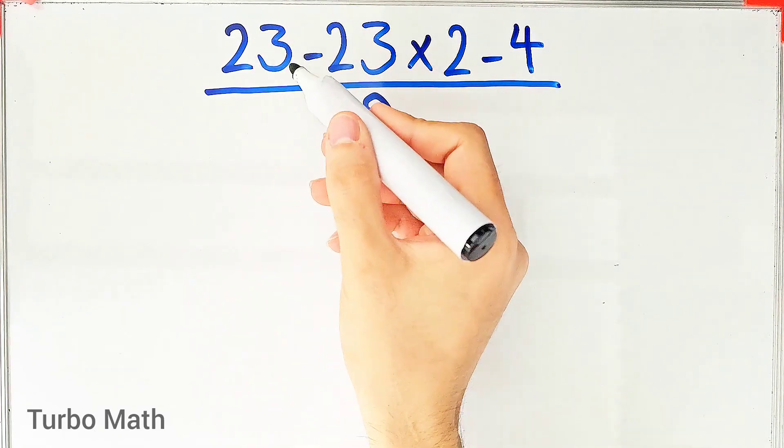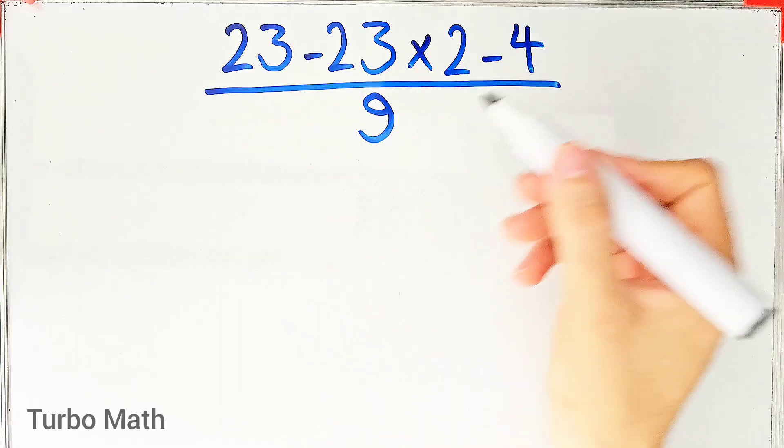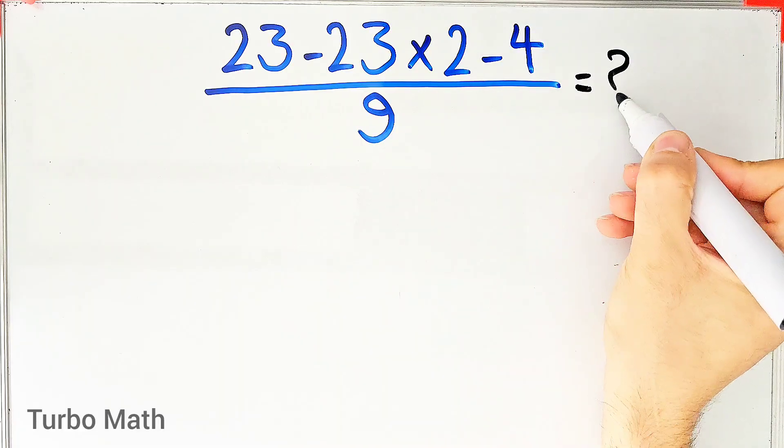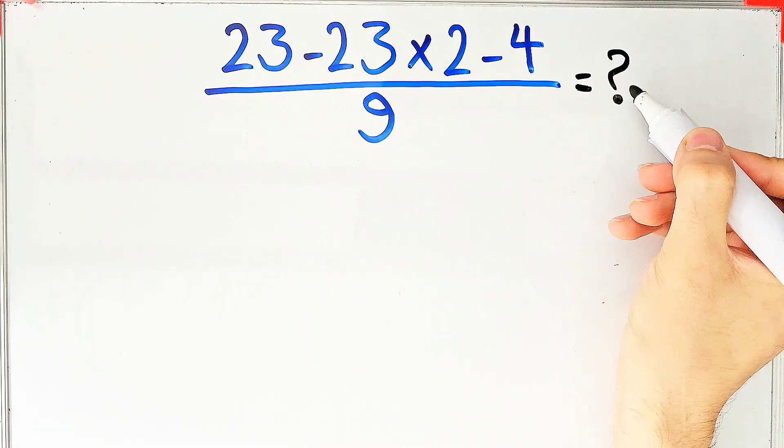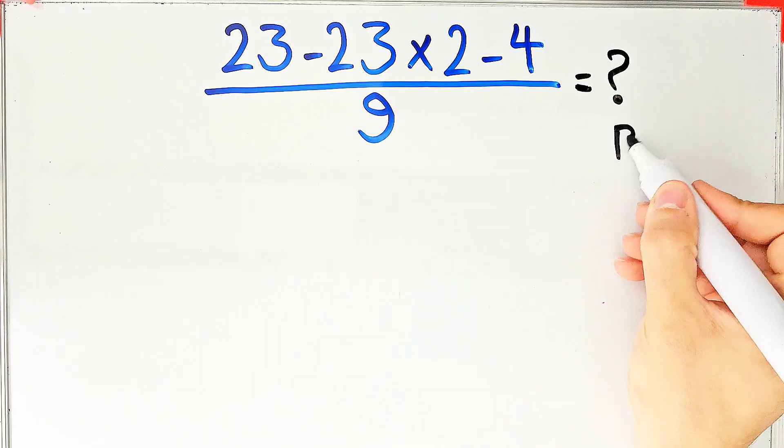23 minus 23 times 2 then minus 4 divided by 9. What is the answer of this question? Can you solve it? Hi friends and welcome to Turbo Math channel. To solve this question we need to follow the PEMDAS rule.